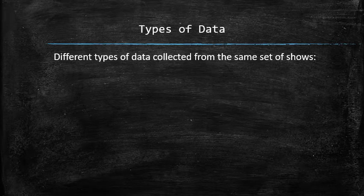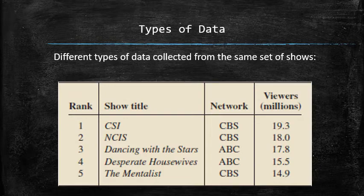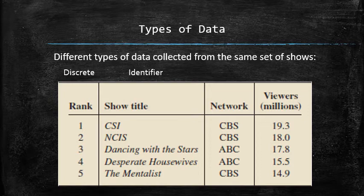Here's an example of different types of data collected from the same set of TV shows. Rank is discrete type, show title is the identifier, network is categorical, and number of viewers is continuous.